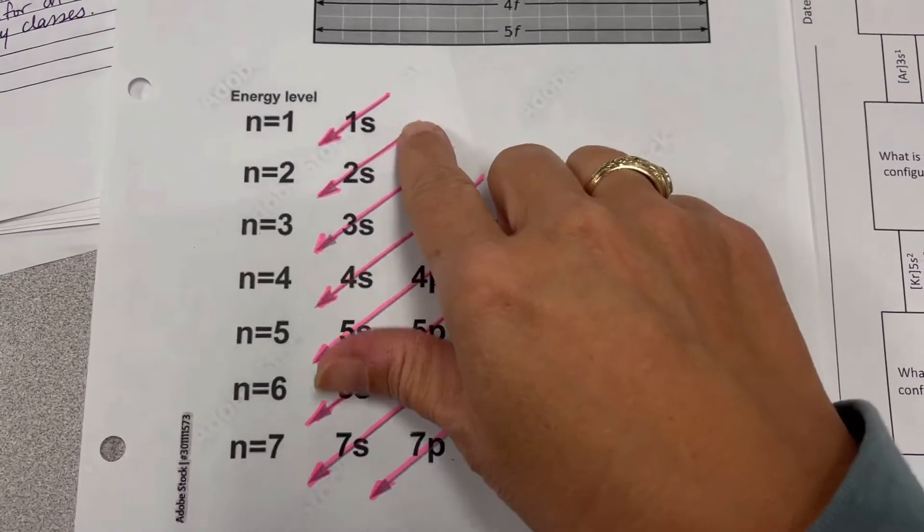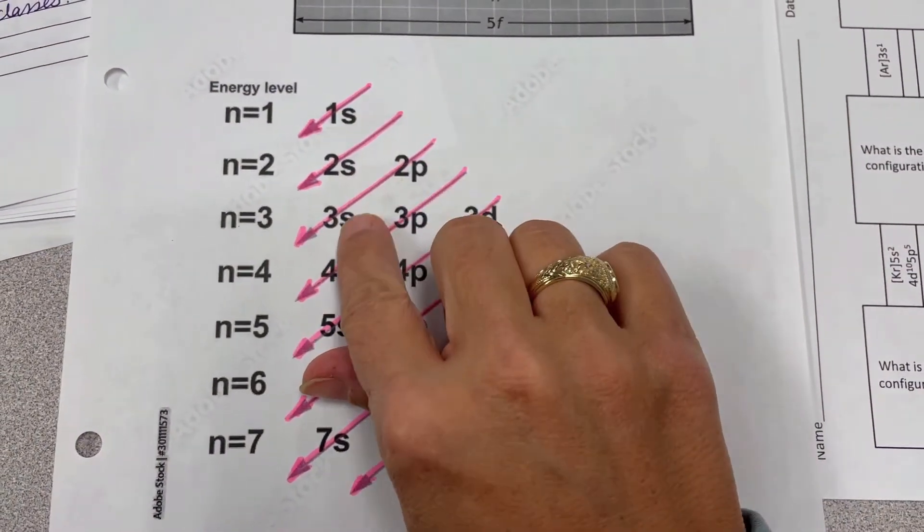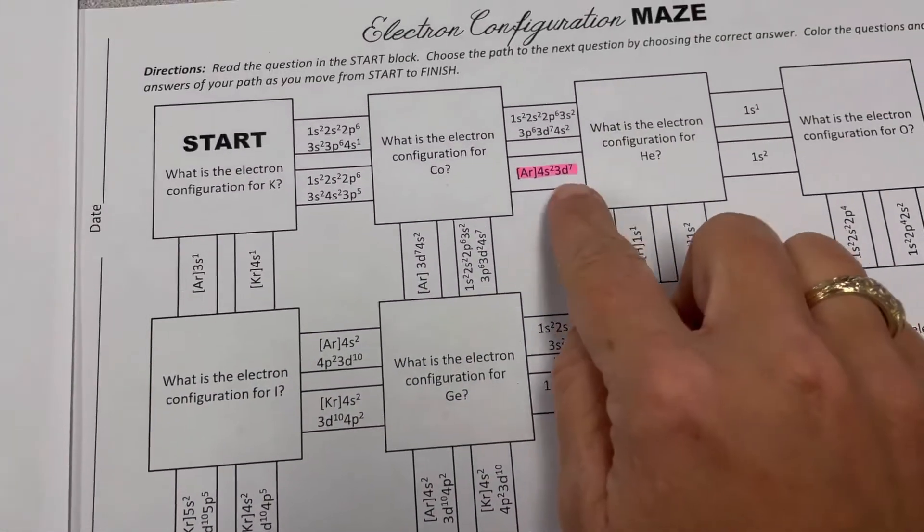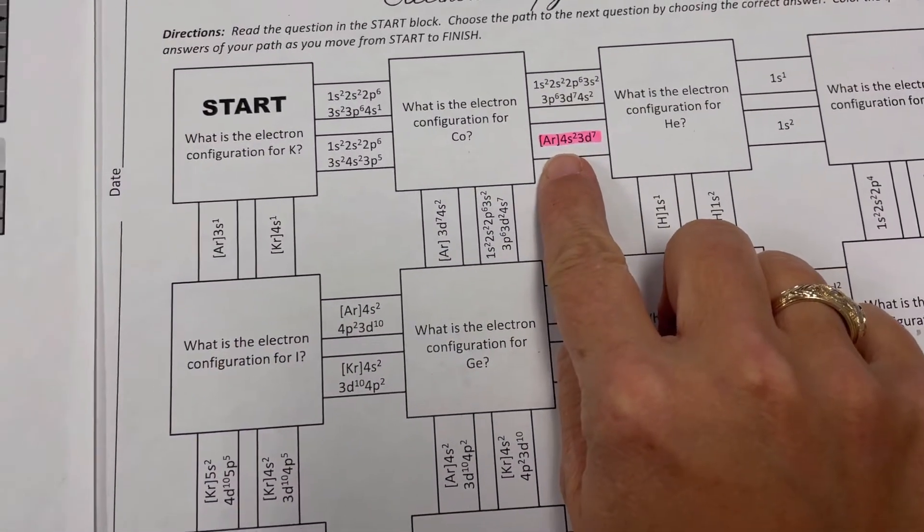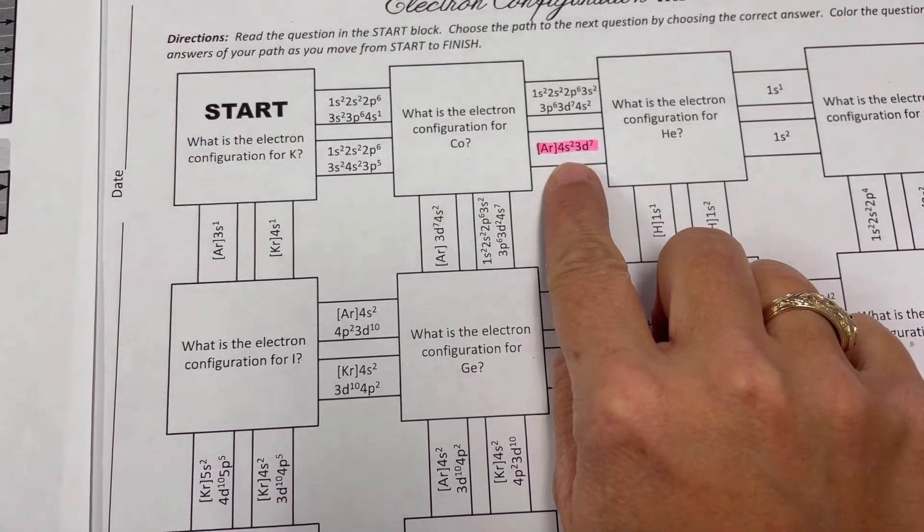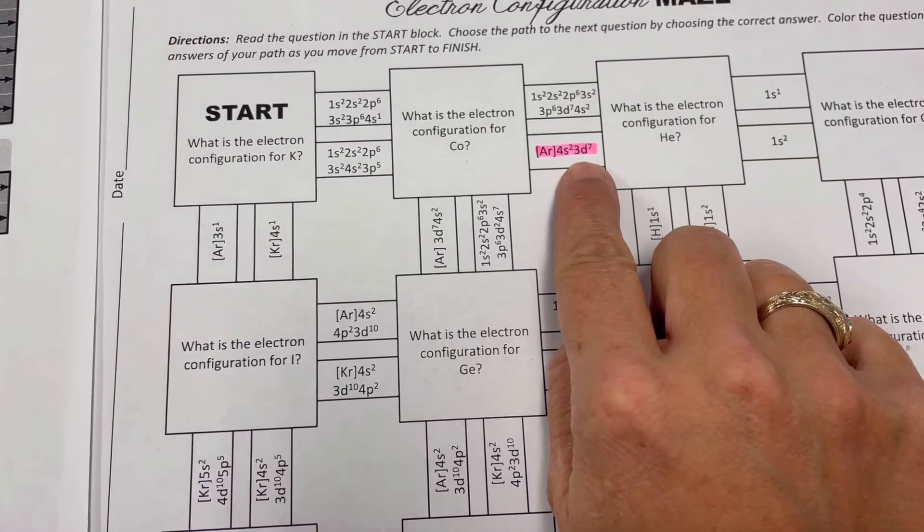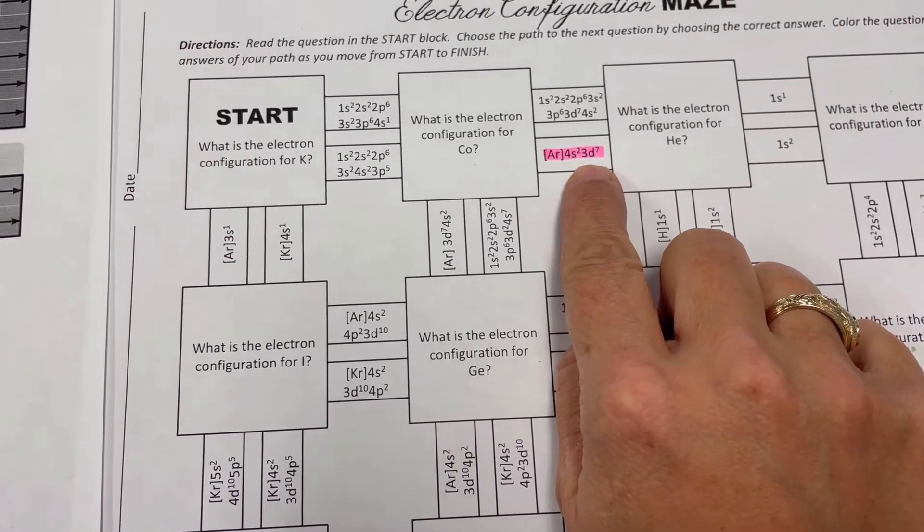We know that we have to go in this order of our arrows when we're writing the configurations. However, I want you to notice I highlighted in pink here, they've written out some electronic configuration shorthand. So you see they've put argon in brackets and then they finished out the configuration. So what in the world does this mean?